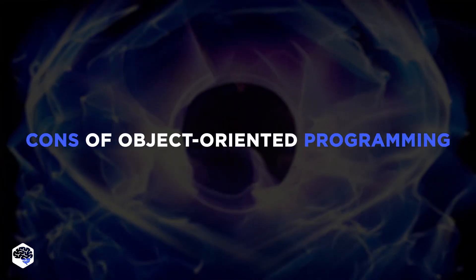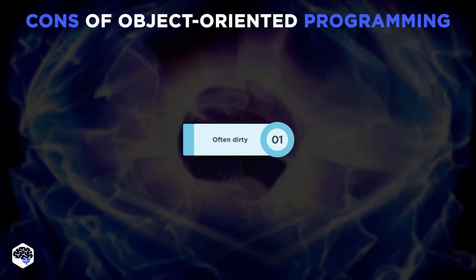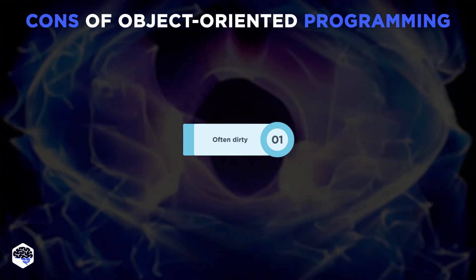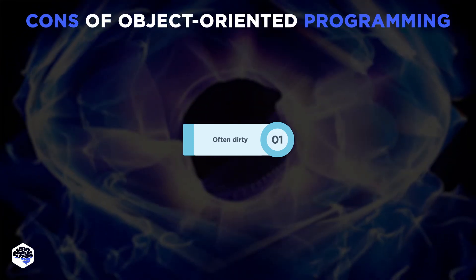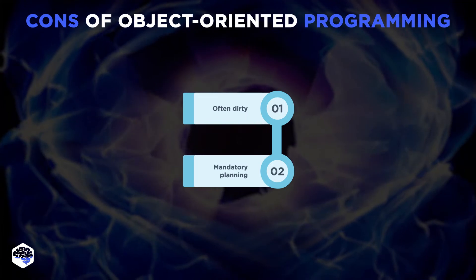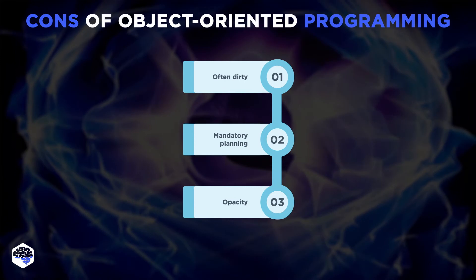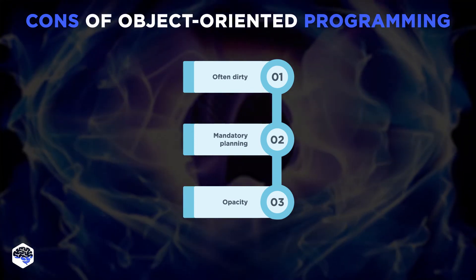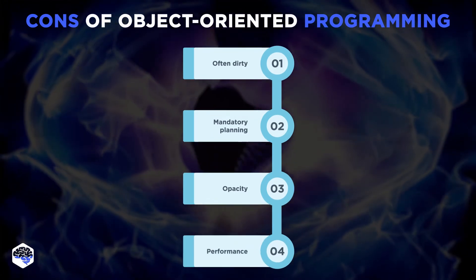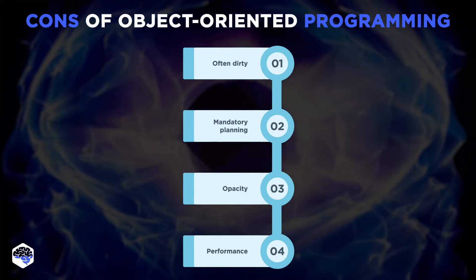There are also drawbacks of object-oriented programming languages. They are often dirty — because these languages are so scalable and customizable, it can sometimes make it hard to comprehend how the code works. Mandatory planning is required, as giving up on a clear design will fail. Opacity is a concern, as these languages are not as transparent as others. And performance, as object-oriented programming languages often suffer from performance degradation.